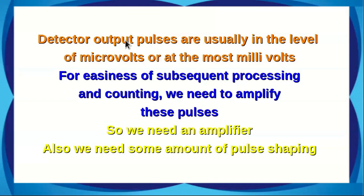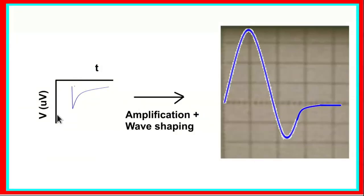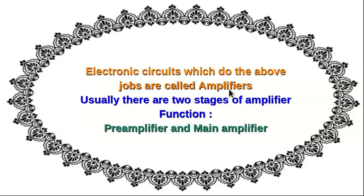Detector output pulses often do not have a suitable pulse shape for later processing, so pulse shaping is also needed. The detector output pulses — on the order of microvolts — are passed through appropriate circuits for amplification and pulse shaping, yielding well-formed signals. The electronic circuits performing these jobs are called amplifiers. There are two stages: a pre-amplifier, which immediately follows the detector output, and a main amplifier connected to the output of the pre-amplifier.